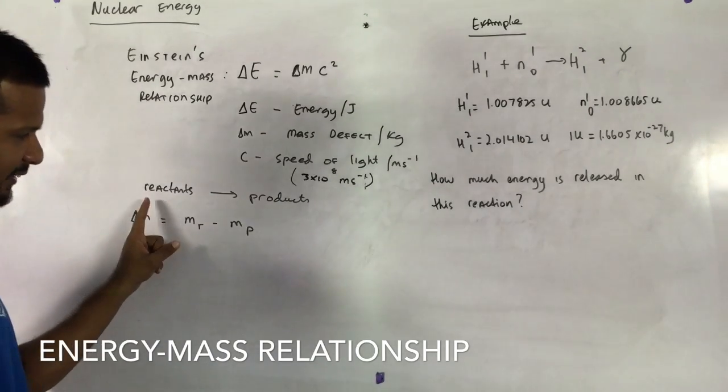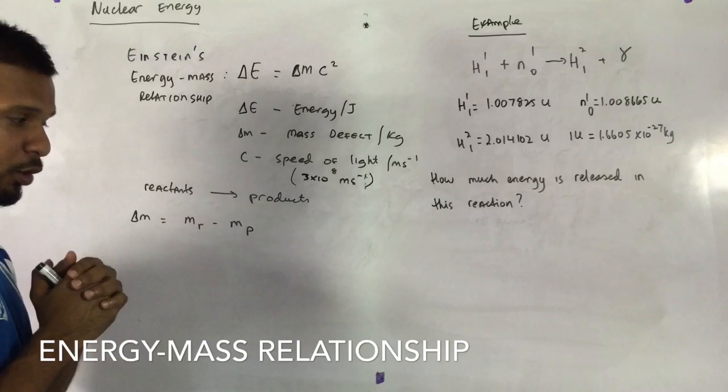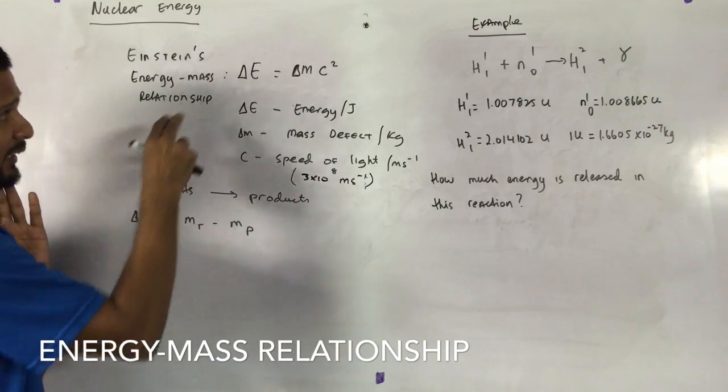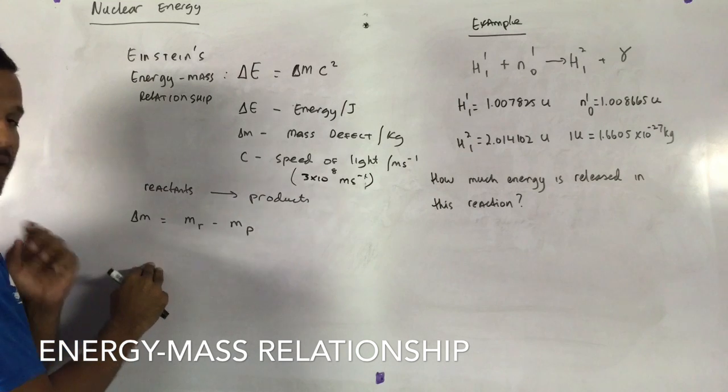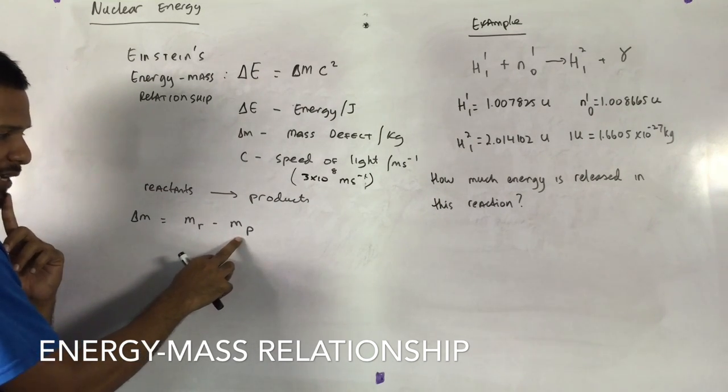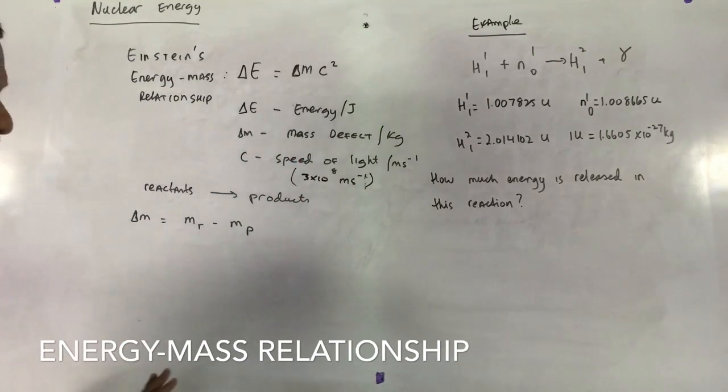Mass defect is a difference in mass of the reactants and the products, a very very small change in mass during a reaction. So what we need to do to find energy in any reaction is find the mass of the reactants minus the mass of the products from it, and then multiply it by the speed of light squared. Very simple.